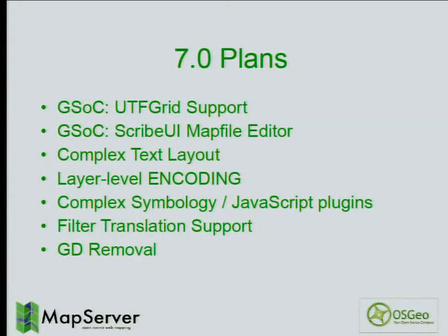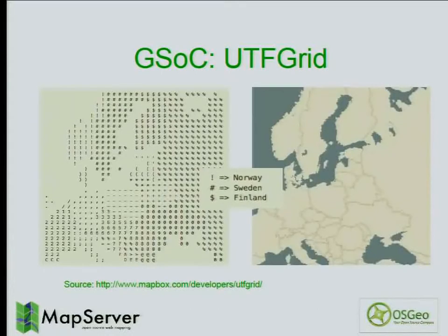Those were the main highlights of 6.4. Now there's already stuff in the pipeline for version 7. We're calling it 7 because there's significant refactoring happening, especially on the text rendering and labeling side. Before getting into those features: we had two Google Summer of Code students this summer for MapServer, which is great — we hadn't had any for a couple of years.